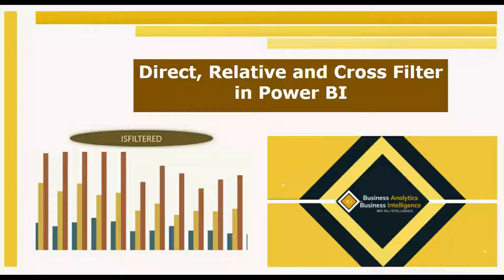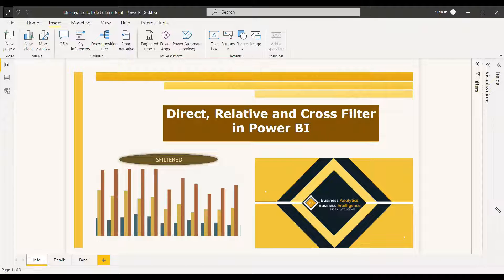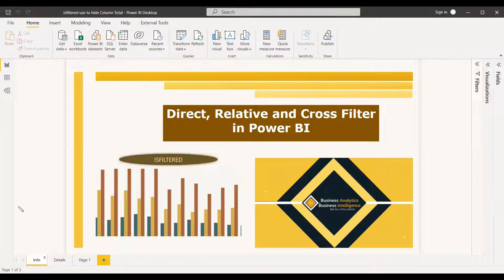Welcome to this new video. This video is about the three types of filters in Power BI which we are using. The first one is direct filter, the next one is relative, and the third one is cross filter. Relative and cross filtering almost look similar, with the function called ISCROSSFILTERED, and direct filtering has a different function called ISFILTERED.